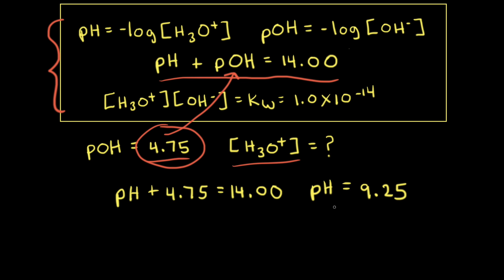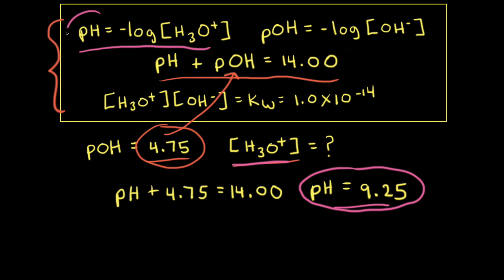So we have the pH and our goal is to solve for the concentration of hydronium ions. pH is equal to the negative log of the concentration of hydronium ions. So we can plug our pH right into this equation, which gives us 9.25 is equal to the negative log of the concentration of hydronium ions.